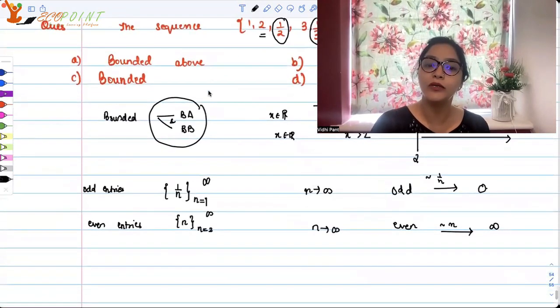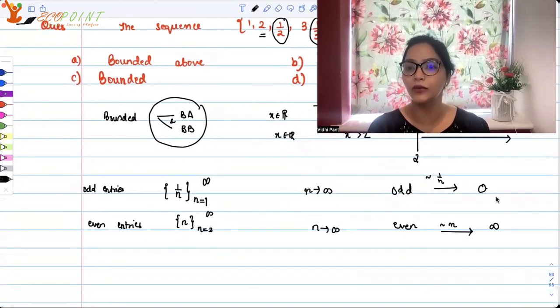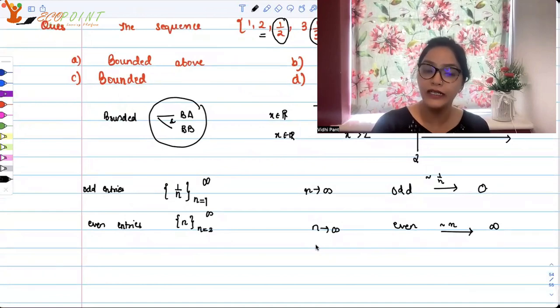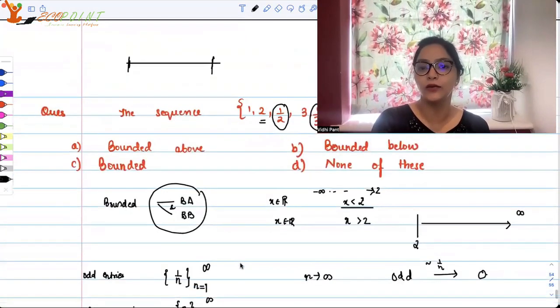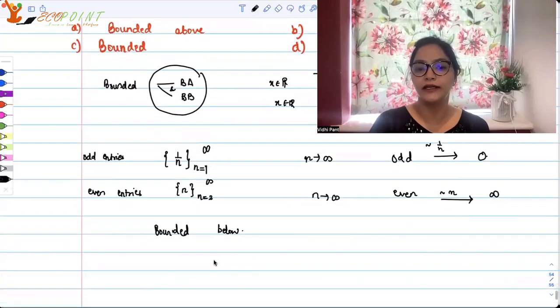It is clearly bounded below because all the terms are more than zero. So it is bounded below by zero. The terms, the odd entries, they are getting smaller and smaller tending towards zero. So you have all entries above zero but moving towards infinity. This is a bounded below case. It's bounded below and actually it is bounded below by zero. So clearly B should be the correct answer.